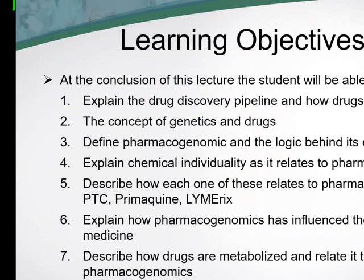The learning objectives for our lesson today: at the conclusion of this lecture, students should be able to explain the drug discovery pipeline and how drugs are tested for efficacy and toxicity, the concept of genetics and drugs, and define pharmacogenomics and the logic behind its existence. Students should also be able to explain what chemical individuality is as it relates to pharmacogenomics.